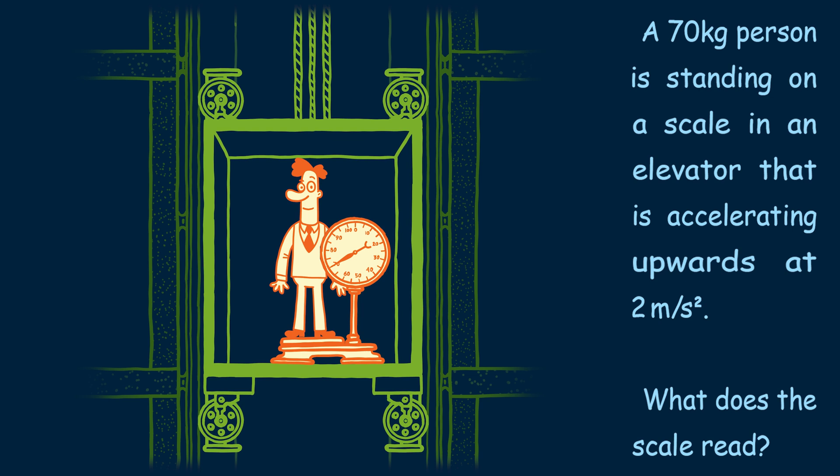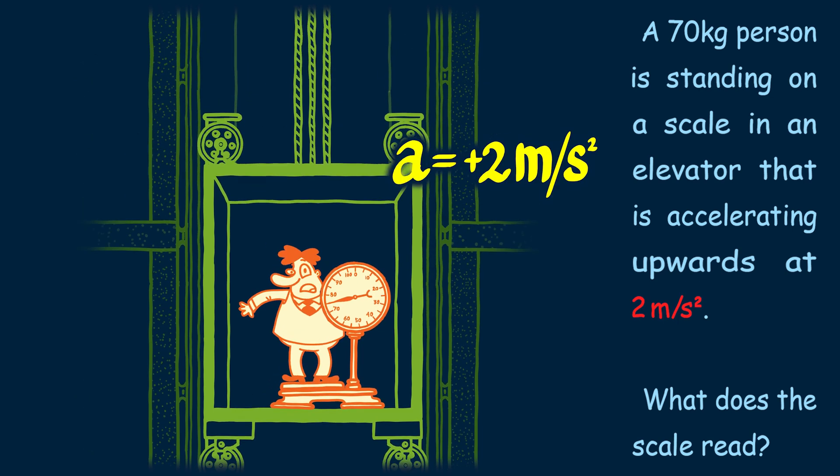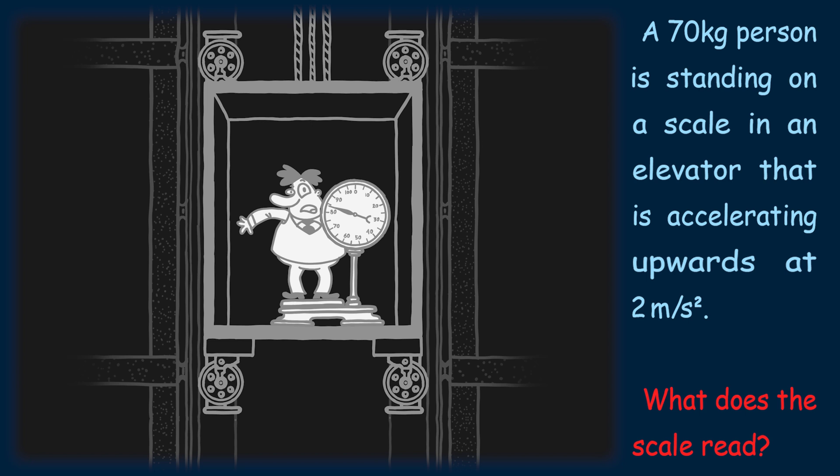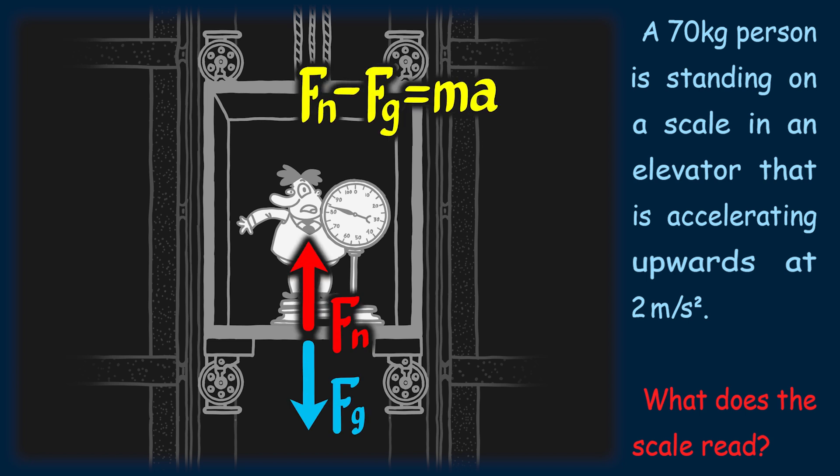Now let's say the elevator starts moving upwards and accelerates at 2m per second squared. Again, we're going to draw our force diagram, which has the same force of gravity. However, the normal force is going to be different, because now the acceleration isn't zero. Since the elevator is accelerating up, I'm going to draw an acceleration arrow in the up direction as well.